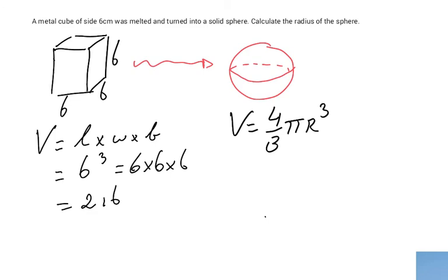4 over 3 pi r to the power 3. And we are trying to find out what is the radius. And 4 over 3 is a number. Pi is a number. And we know the volume. So the only unknown is my r, because I will equal this now to 216.